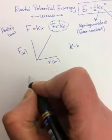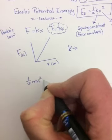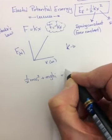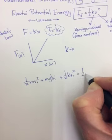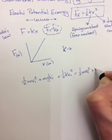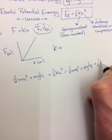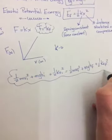And so Conservation of Mechanical Energy is saying 1 half mv initial squared plus mgh initial plus 1 half kx initial squared should be equal to 1 half mv final squared plus mgh final plus 1 half kx final squared. So this is the conservation of mechanical energy.